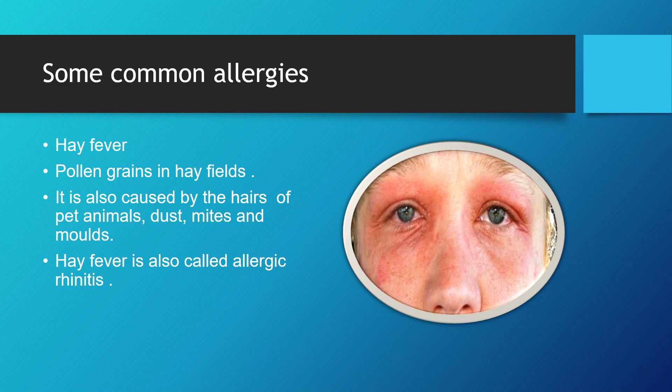The first common allergy we discuss is hay fever — a very common allergy. Hay fever is caused by pollen grains and hay fields, as well as by hairs of pet animals, dust, mites, and molds. Hay fever is also called allergic rhinitis. These people have a continuous running nose — they are constantly sneezing and fluid keeps coming out from the nose.